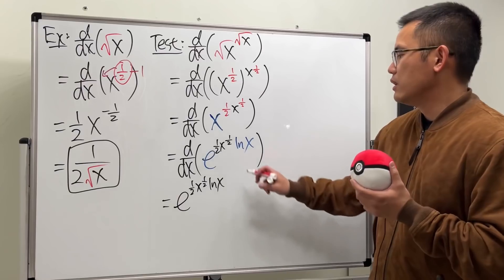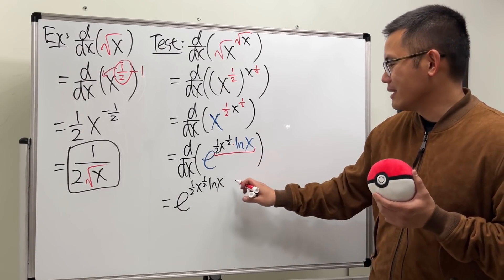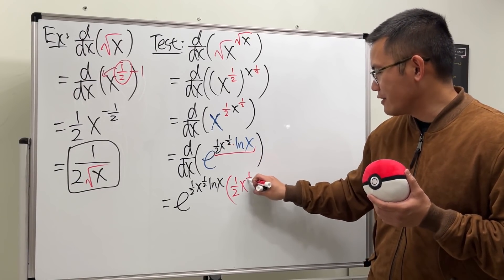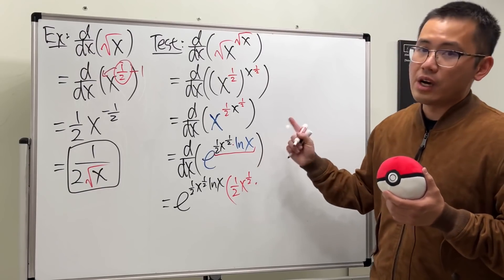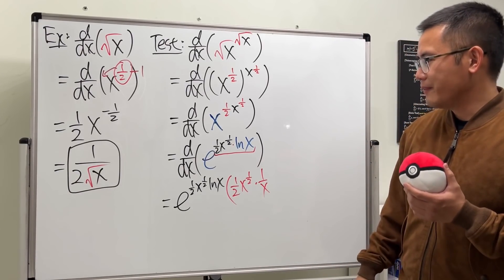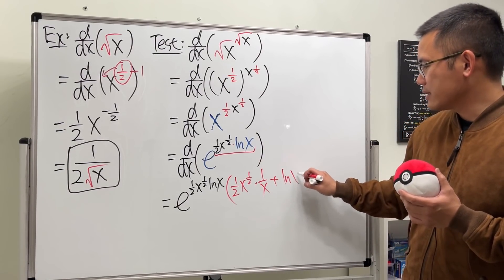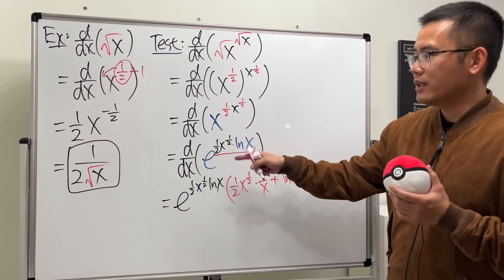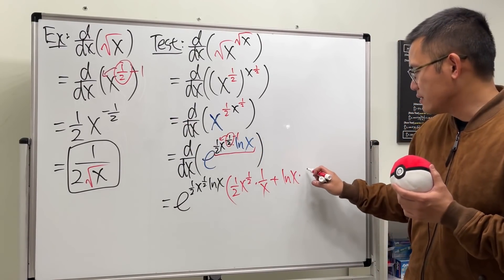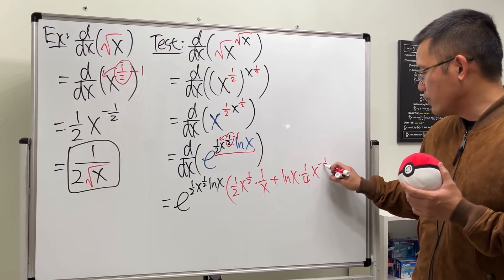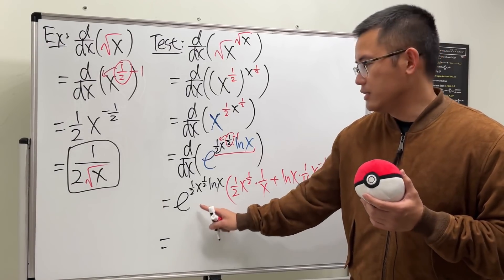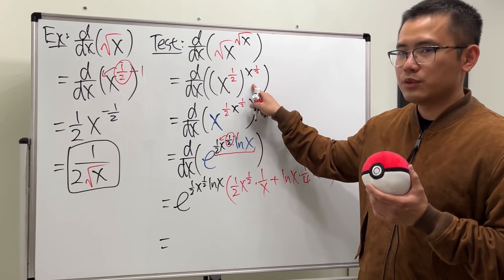You'll have to use the chain rule, and then differentiate the exponent using the product rule. Keep the first function, one-half x to the one-half power, and multiply by the derivative of ln x, which is one-over-x. Then add the second function, ln x, multiplied by the derivative of the first: bring the power to the front — one-half times one-half gives one-over-four — and we get x to the negative one-over-two power.